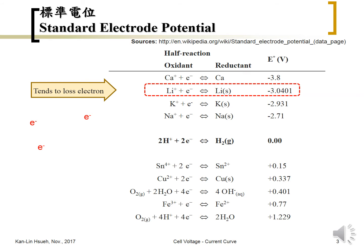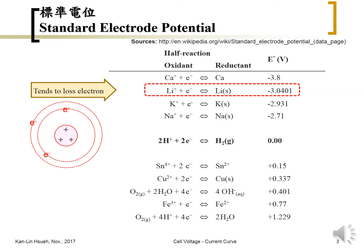This can be understood from the electron configuration of lithium. Lithium has atomic number three, so there are three protons and three electrons. In the 1s orbital there are two electrons, and in the 2s orbital there is one extra electron. This outermost electron is easily lost, so lithium tends to be oxidized rather than reduced.